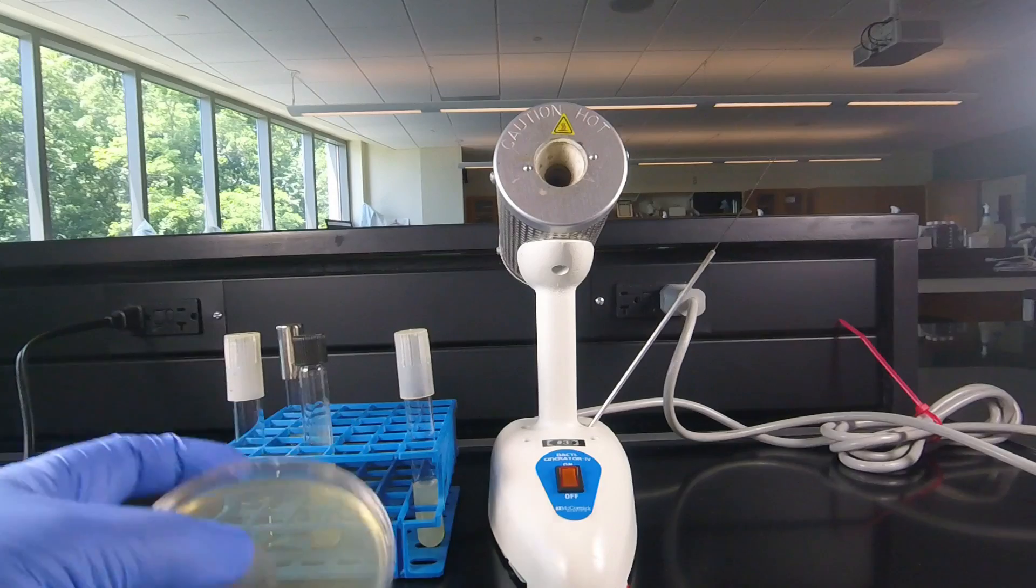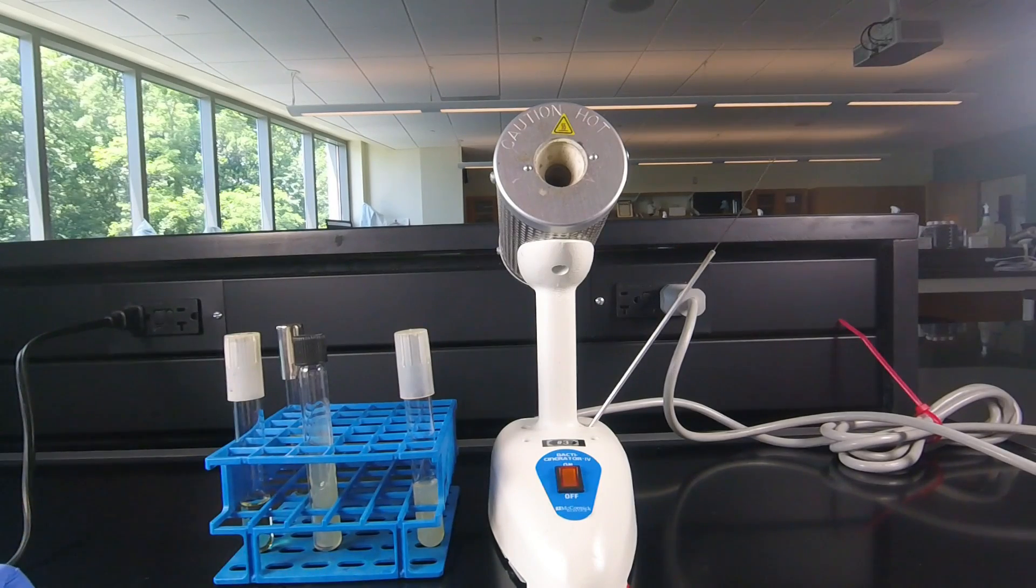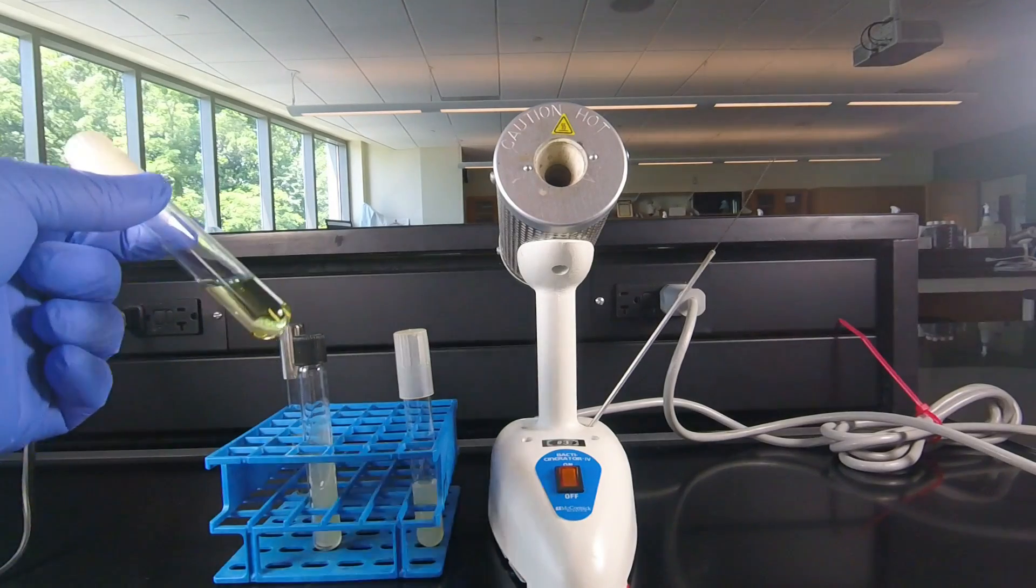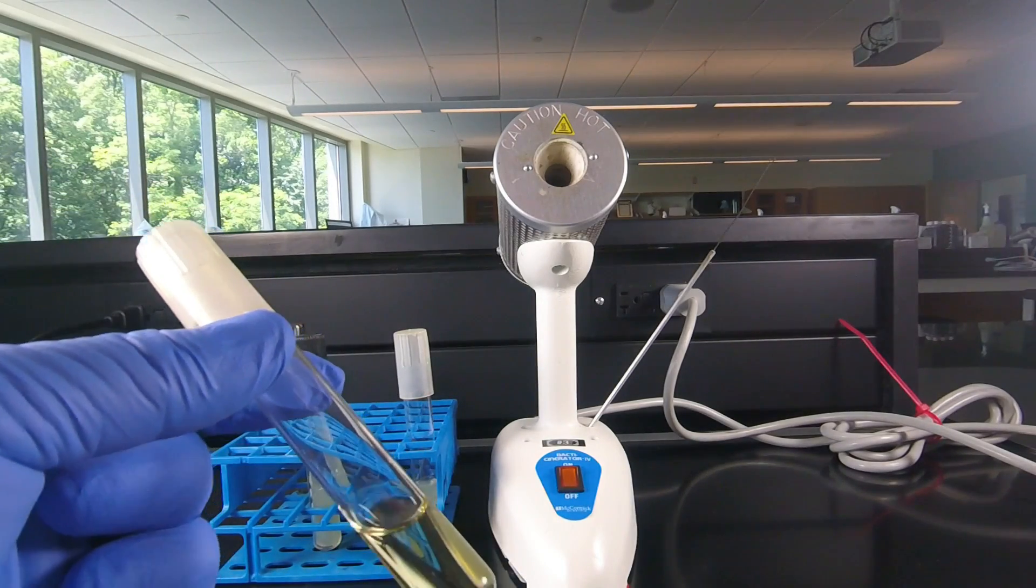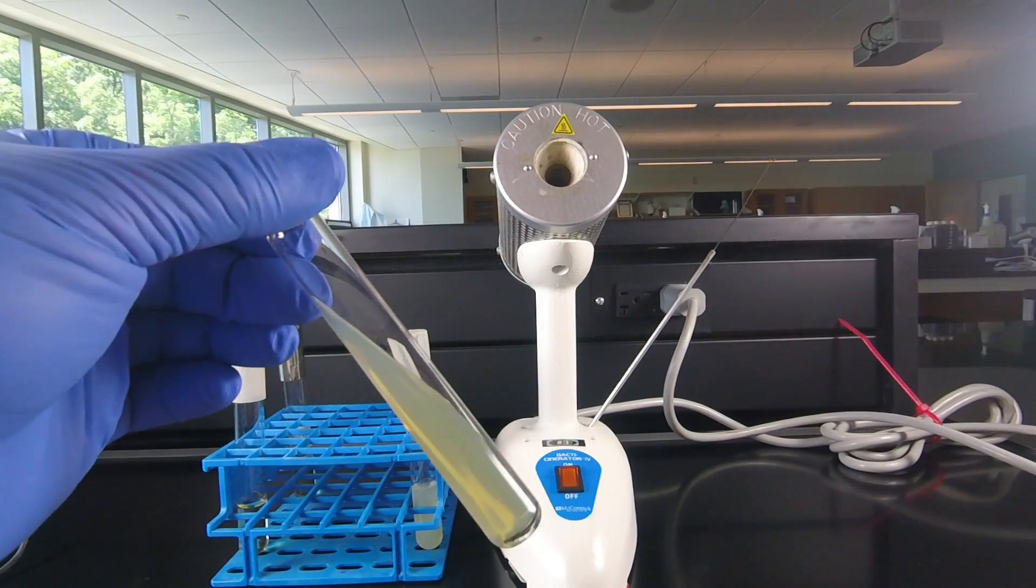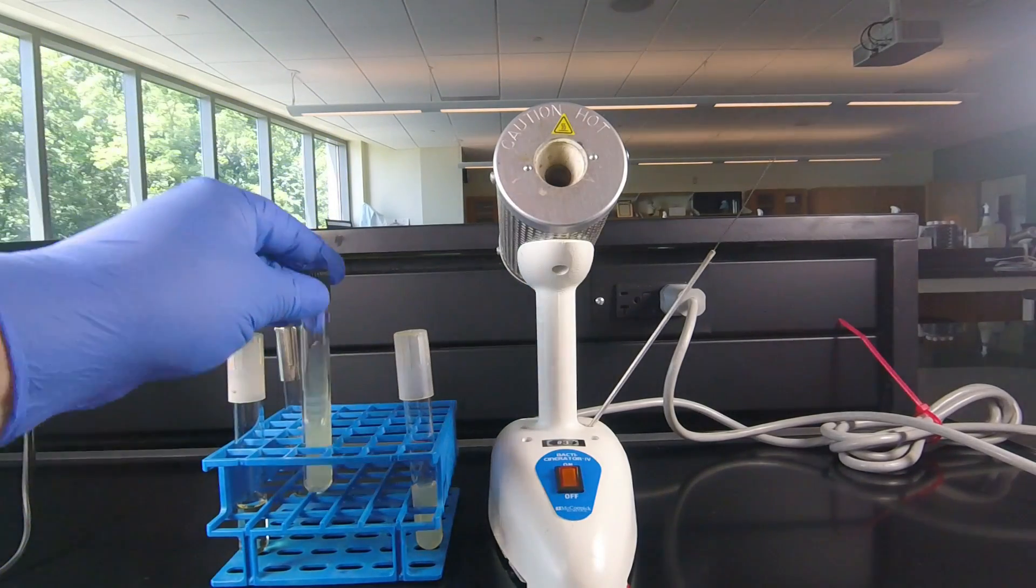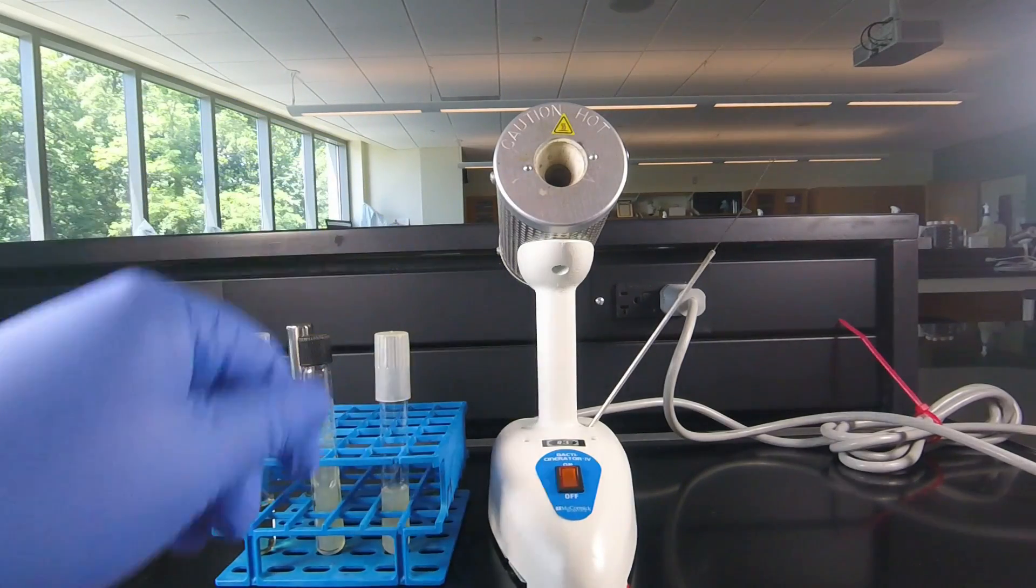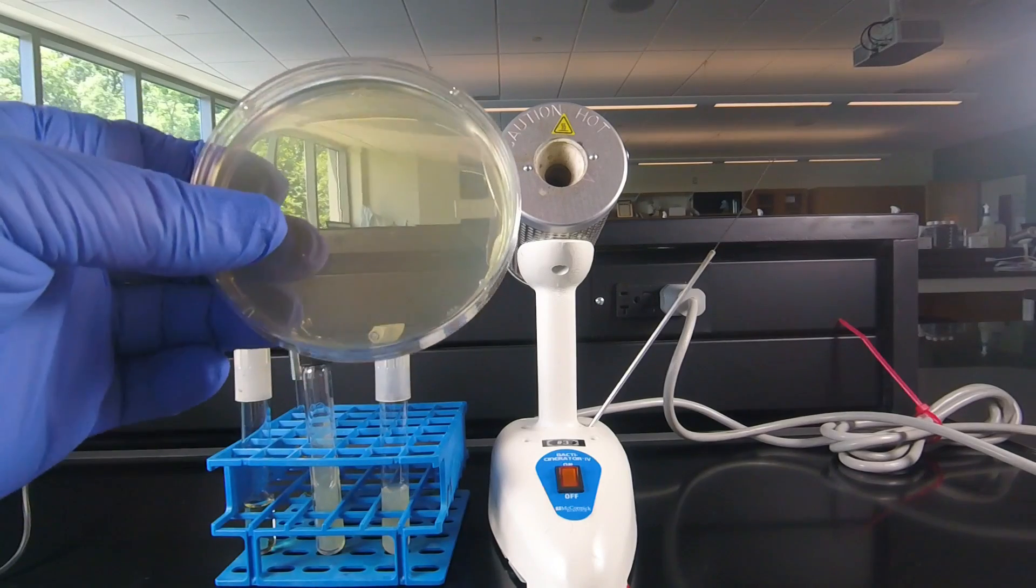So those are the basic forms of growth medium we'll be using or culture medium. The broth tube, which is the liquid. The slant tube, that has a slanted surface. The stab tube, which we inoculate by stabbing. And finally, the petri plate.